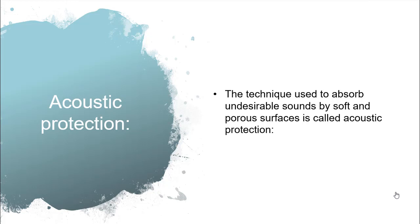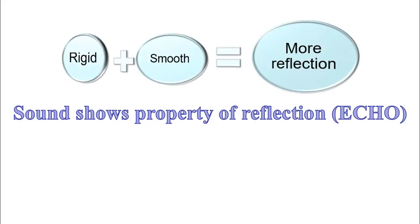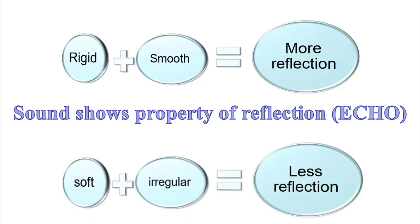The question arises: why do we need acoustic protection? Sound shows the property of reflection, which is also called echo. What kind of surfaces show more reflection and what kind show less? If the surfaces are rigid and smooth, there is more reflection. But if the surfaces are soft and irregular, the reflection is less, because irregular surfaces can absorb sound, while rigid surfaces do not absorb sound and thus show more reflection.